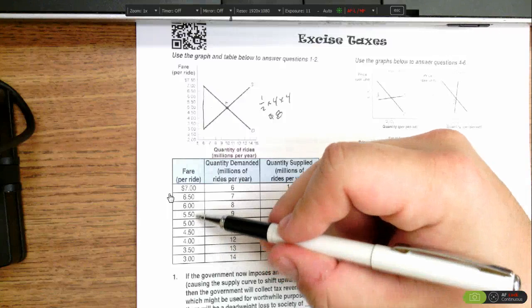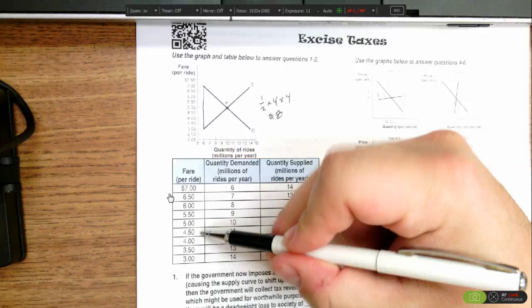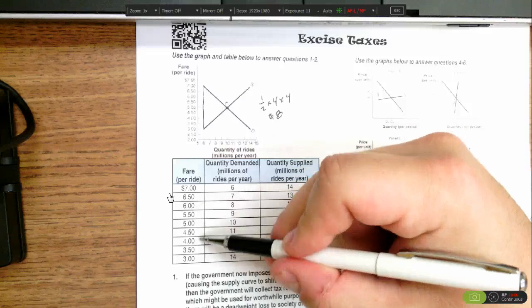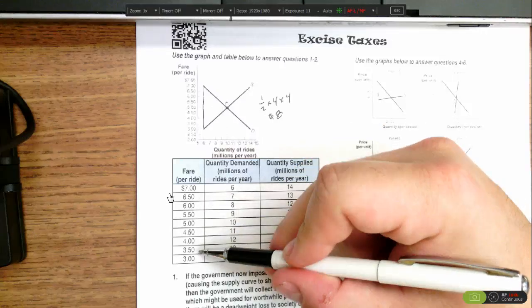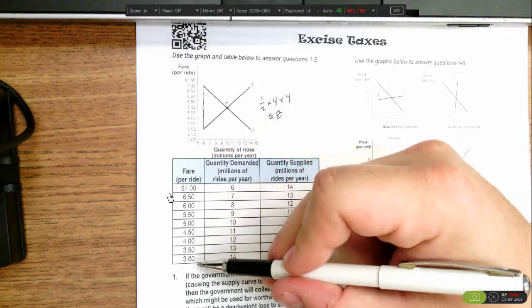then I would just go up, decrease demand by one, increase supply by one. That's a dollar difference. Six and four is $2. $6.50 and $3.50 is $3. $7 and $3, that's a $4 gap. So that tells me that's my tax wedge.